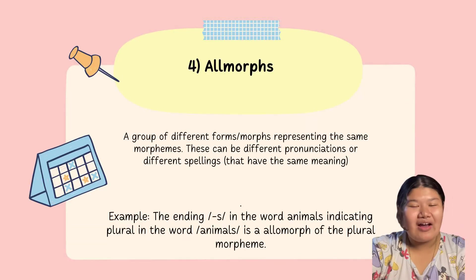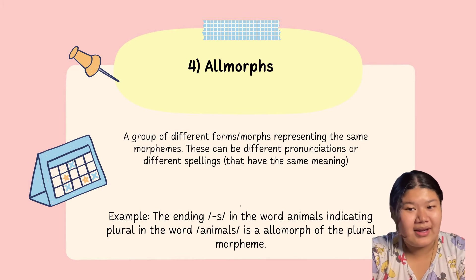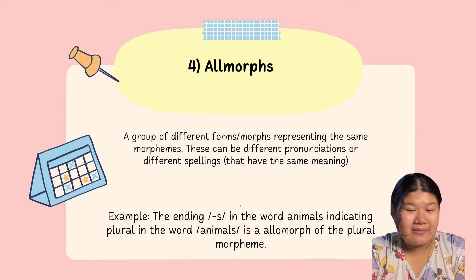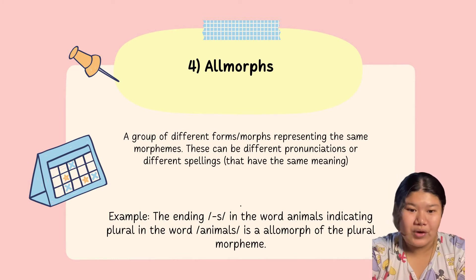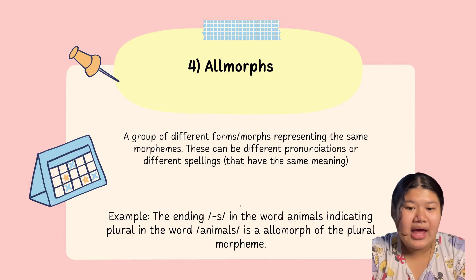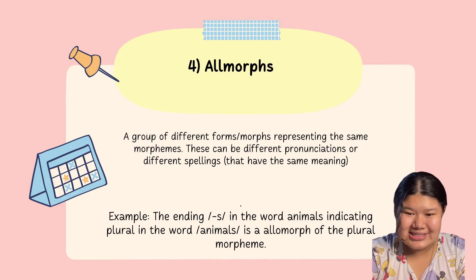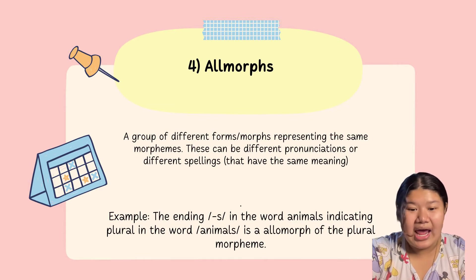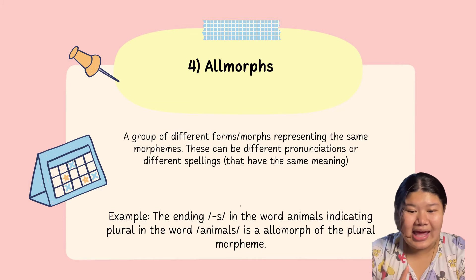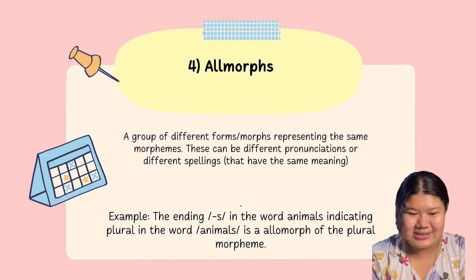Allomorphs are a group of different morphs representing the same morpheme. They can have different pronunciation or different spelling but have the same meaning. For example, the ending 's' in the word 'animals' indicates the plural.